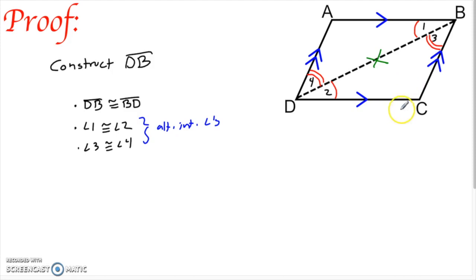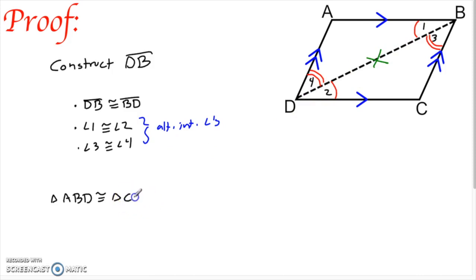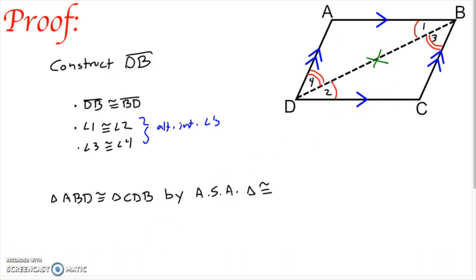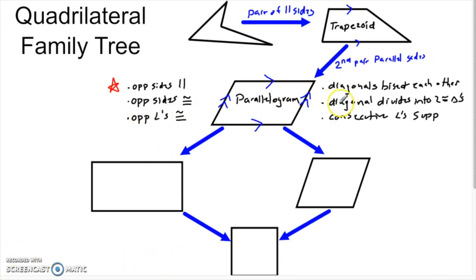Looking at the two triangles, I have angle, side, angle — so those triangles are congruent. Triangle ABD is congruent to triangle CDB by angle-side-angle. That proves the first property: placing the diagonal into the parallelogram gives two congruent triangles.